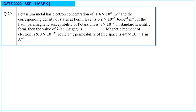Next question: Potassium metal has an electron concentration of 1.4×10^28 per meter cube and the corresponding density of states at the Fermi level is 6.2×10^46 per joule per meter cube. If the Pauli paramagnetic susceptibility of potassium is n×10^(-k) in standard scientific form, then find the value of k. The magnetic moment mu_B and permeability mu_0 are also given.